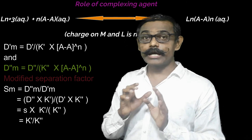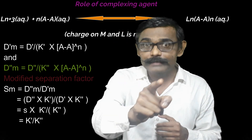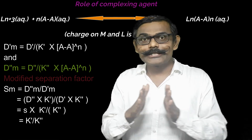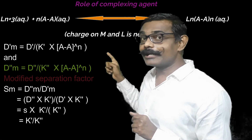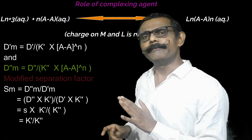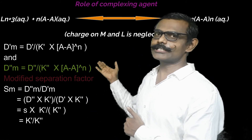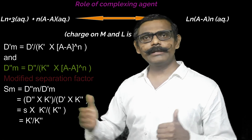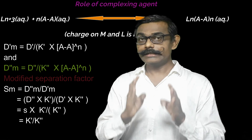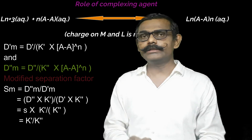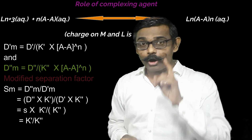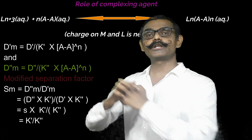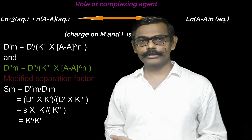K' and K'' are the stability constants of the complexes of neighboring lanthanides, and they are different from each other. Therefore the value of Sm will be considerably less than 1 or more than 1, enabling effective separation. The tendency of lanthanides to form complexes differs among themselves — this is the main principle by which we can separate lanthanoids using the ion exchange method.